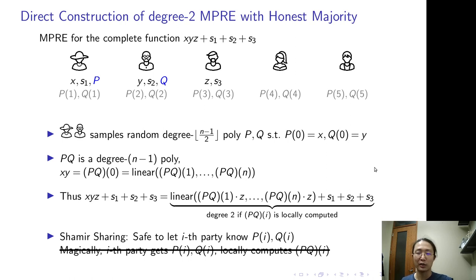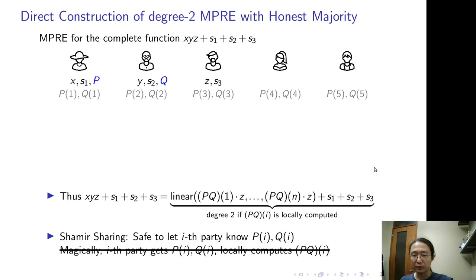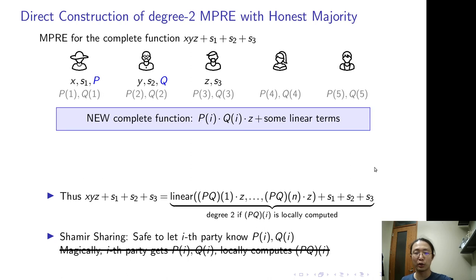The problem is that parties won't magically get P(i)Q(i). Though this doesn't work out directly, we are making some progress here. Consider all the monomials in the formula. We can compute them separately.